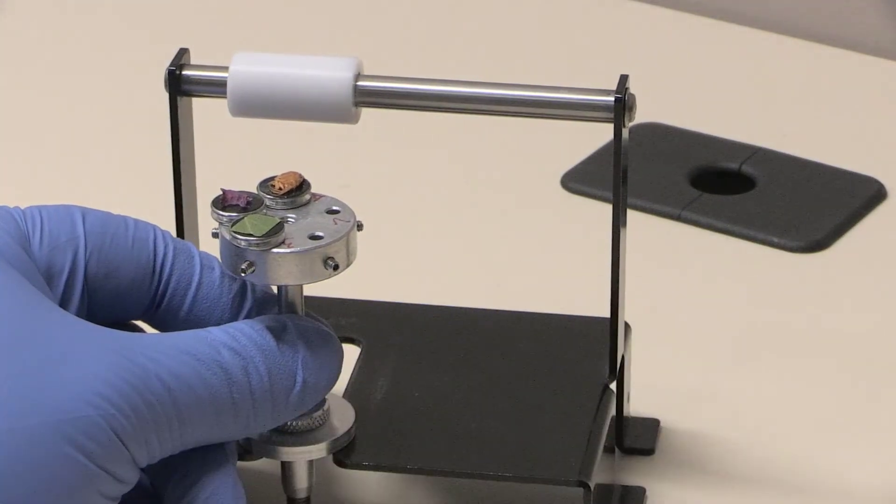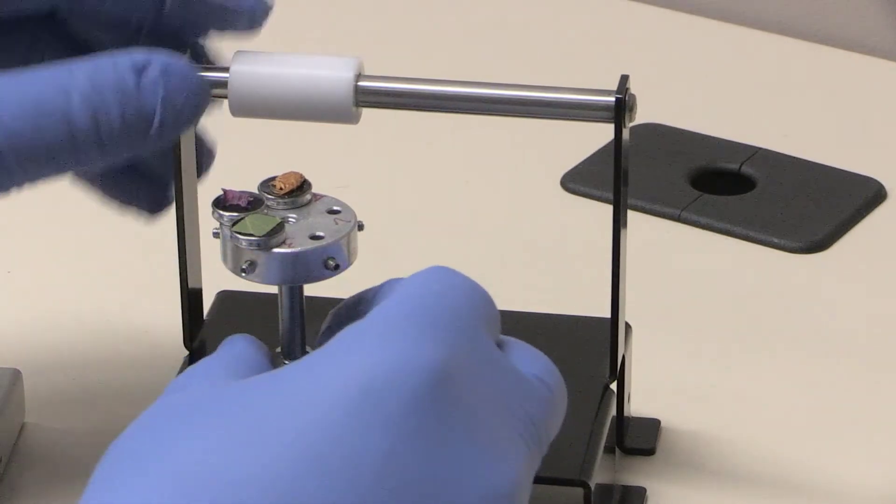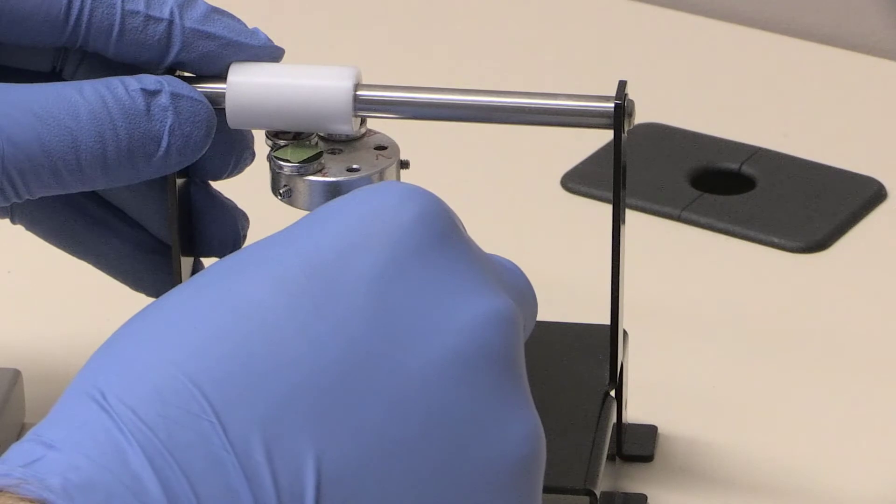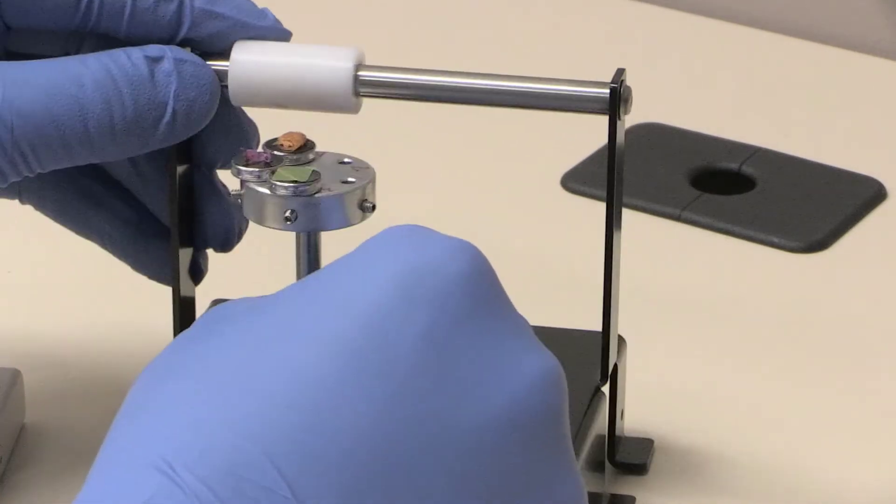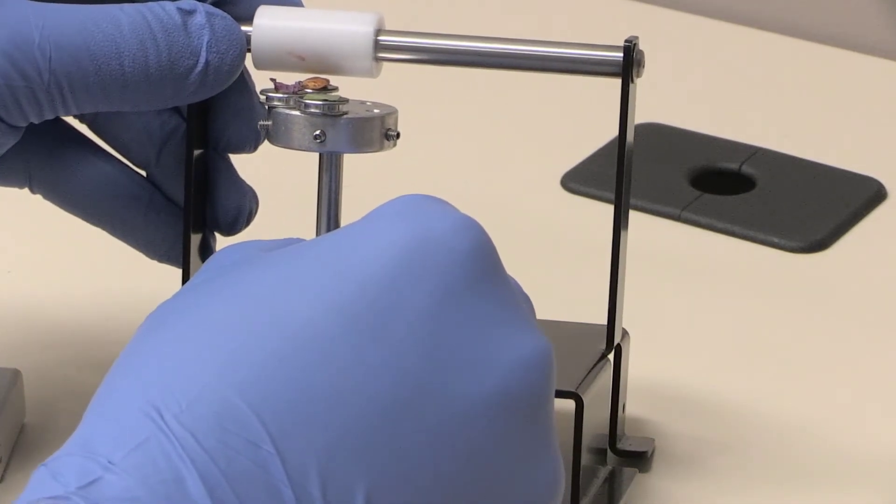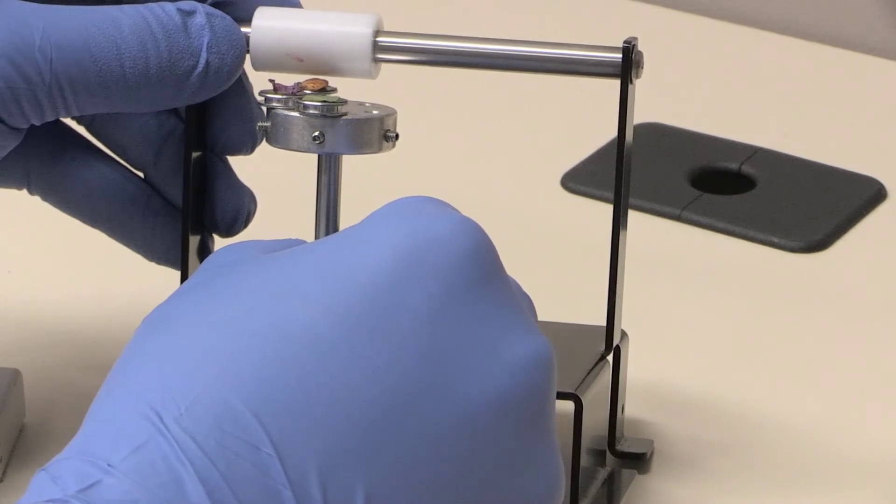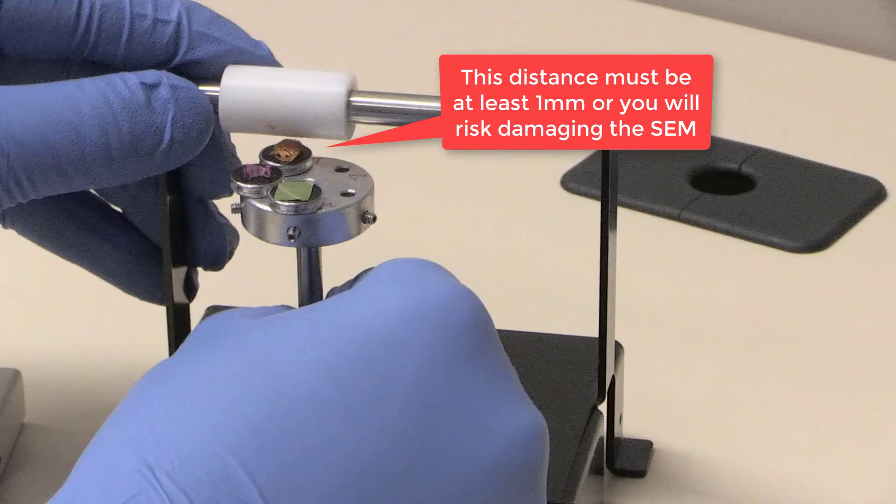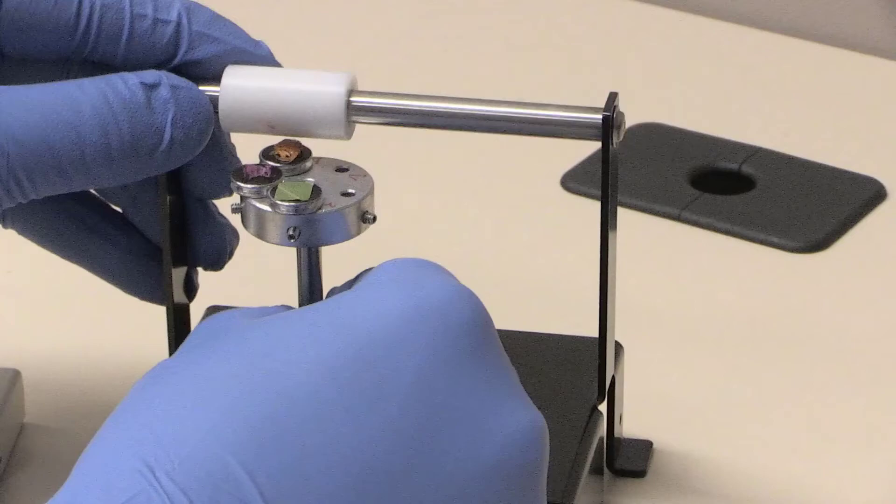When all of your specimens are secure, place the specimen stub in the calibration device. Make sure all of your mounted specimens barely pass under the white roller. There should be about one millimeter of clearance. This is a crucial step to ensure your specimens are close enough to get a good image, but far enough away that they won't scratch the delicate instrumentation inside the SEM.